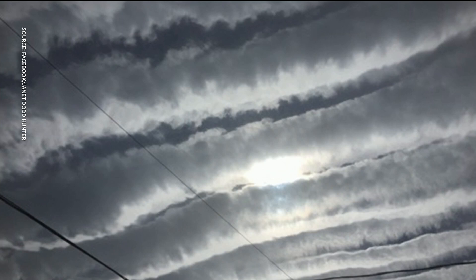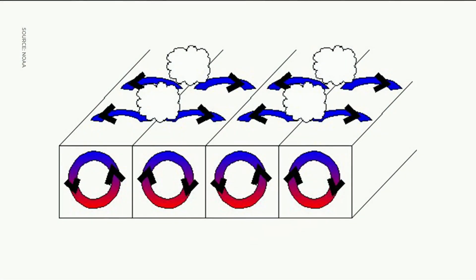Now they form — cloud streets, just like streets we drive on. We've got a graphic from NOAA, the National Oceanic Atmospheric Administration. When you see clouds like this forming, they're forming parallel to the wind. See how the arrows are pointing up towards the centre of the cloud? When air rises, clouds form. When air sinks, you see the clouds not forming.